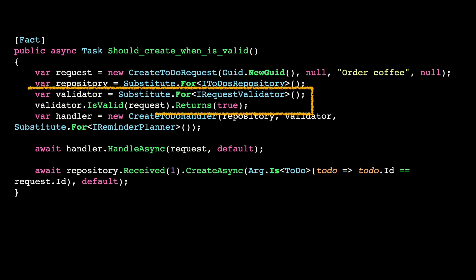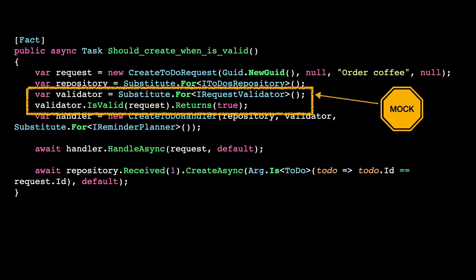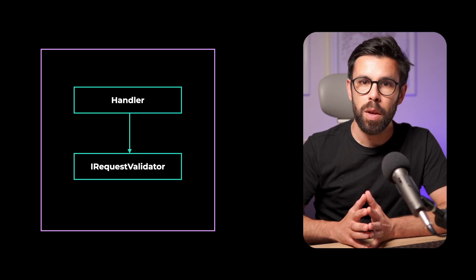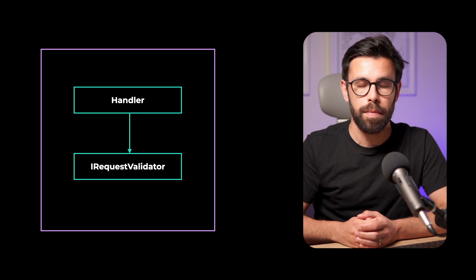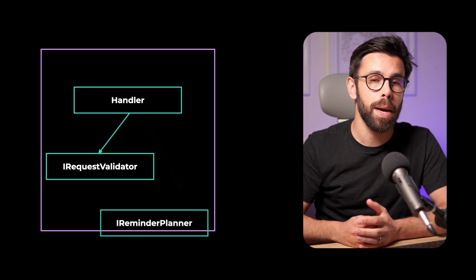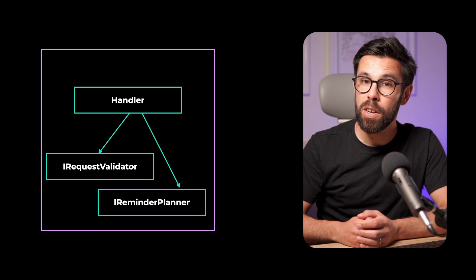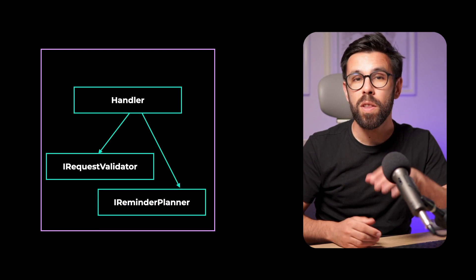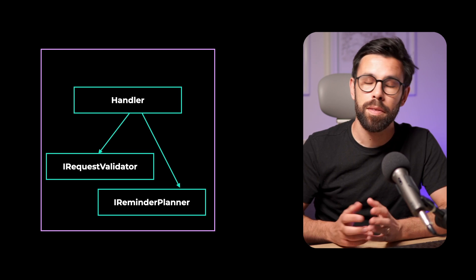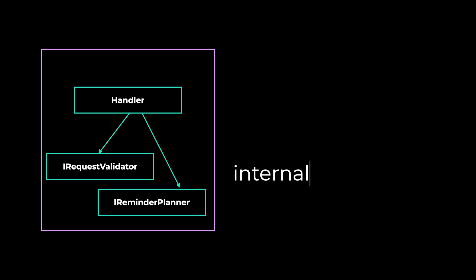The next time you are just about to create a new mock, make sure you stop and think about this. From this small snippet, we can see that our handler has multiple dependencies, and I want to focus on two of them: the IRequestValidator and the IRemindaPlanner. Why focus on those two? Because they are all inside of this purple box for a reason — they are all internal dependencies. And this is the type of dependency that you should not create mocks for, or any other type of test double.